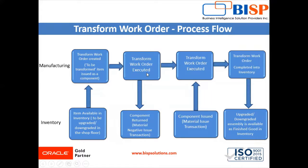First we execute the transform work order so that we can return the component and perform the material negative issue transaction. Then we execute the transform work order again, but this time we issue the component and complete it as a finish item back to the inventory. The transform assembly can be an upgraded or downgraded version of the original assembly. Let's move on to the application and see how to create a transform work order in Oracle Fusion Supply Chain Management Manufacturing application.